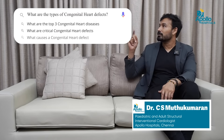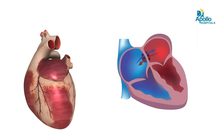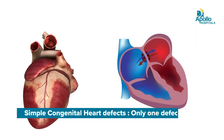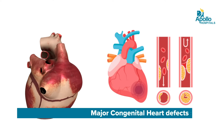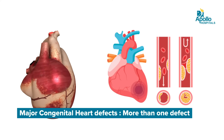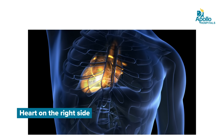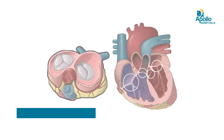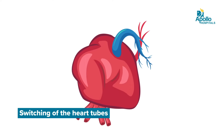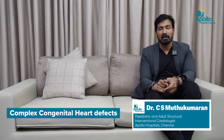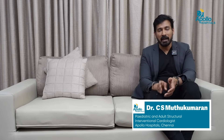What are the types of congenital heart defects? Congenital heart defects can be simple, major, and complex. A simple defect can be a hole in the heart or a valve not opening properly — only one thing affected. When there is more than one defect, like a valve problem and also a hole in the heart, they are called major congenital heart defects. Sometimes the heart is shifted entirely to the right side, or the tubes may be switched over — this complex anatomy is called complex congenital heart defects.